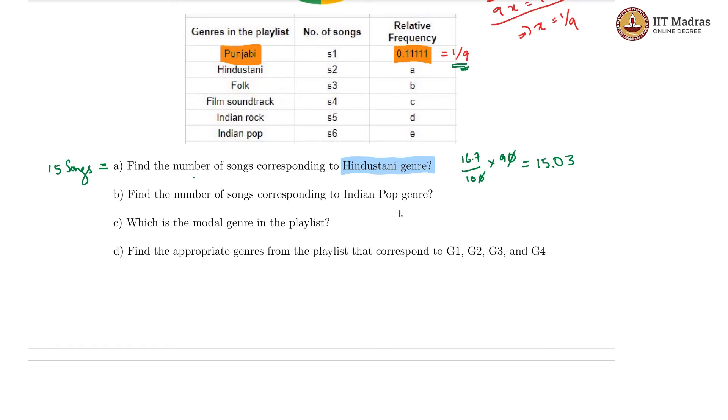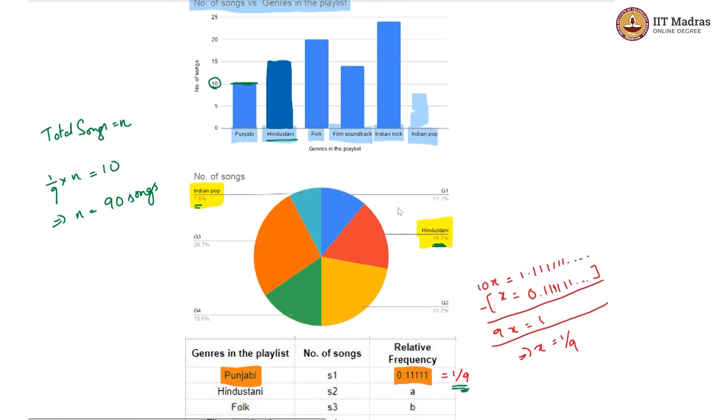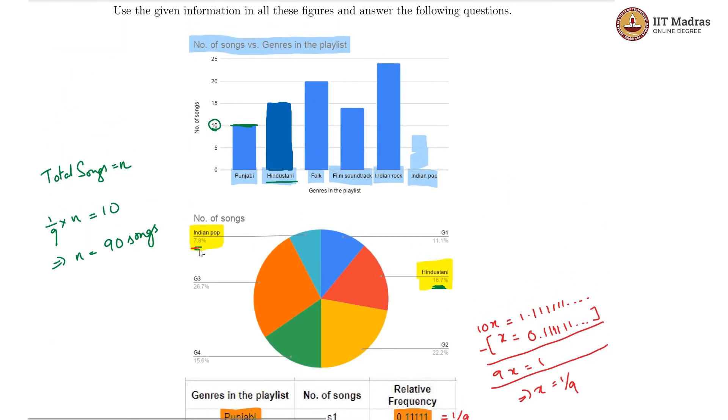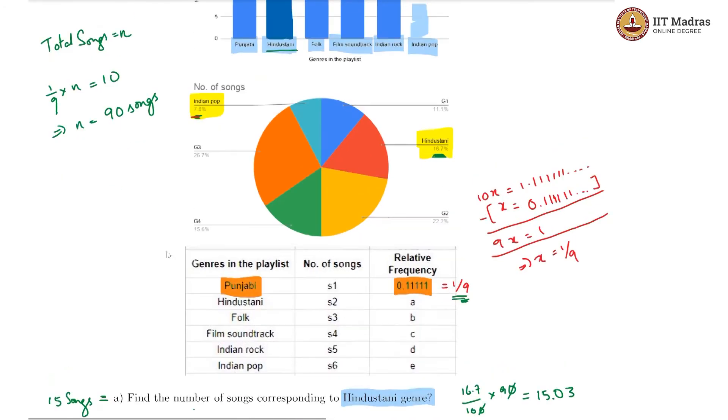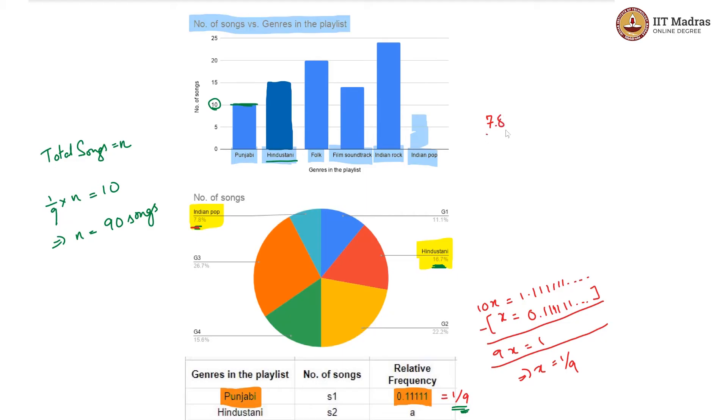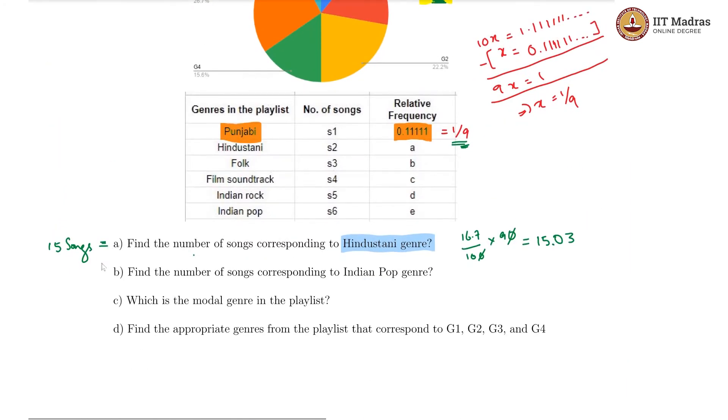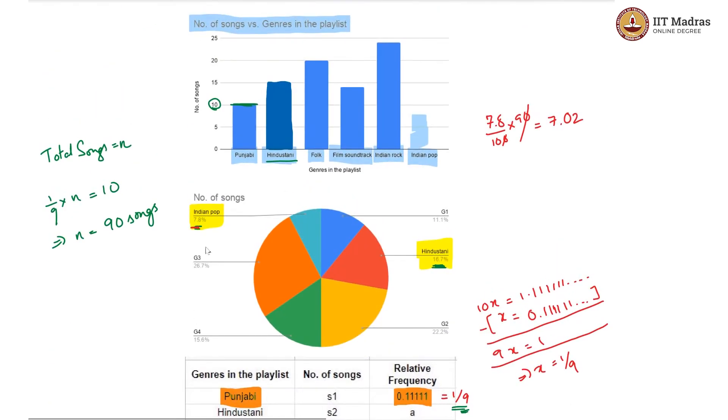Moving on, find the number of songs corresponding to the Indian pop genre. We have Indian pop to be 7.8 percent. So again, we have 7.8 percent of 90 songs. Let us calculate it here. We would get 7.8 by 100 into 90, which gives us 0.78 into 9, which is 7.02. So yeah, this must be rounded off to 7 songs. Going back to our bar graph, that probably comes somewhere here. It looks something like this.